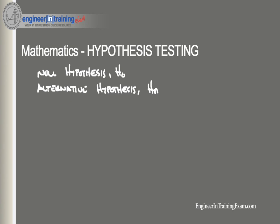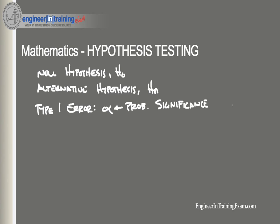There are also two types of errors that can result from a hypothesis test. The first being a type 1 error. A type 1 error occurs when we reject a null hypothesis when it is true. The probability of committing a type 1 error is called the significance level, or alpha. The second type of error is the type 2 error. A type 2 error occurs when we fail to reject a null hypothesis that is false. The probability of committing a type 2 error is called beta.